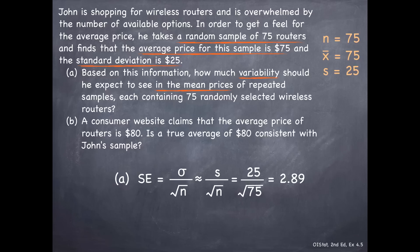This is the amount of variability he should expect between sample means, each containing 75 randomly selected wireless routers. Now let's think about what we can do with this information. Let's move on to part B.